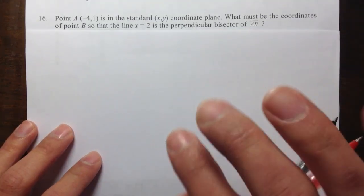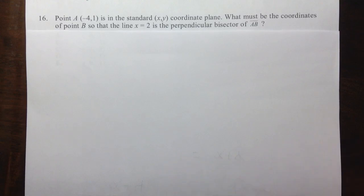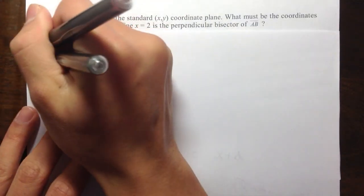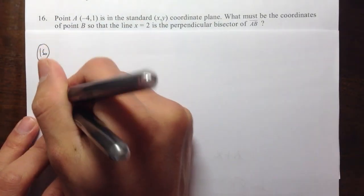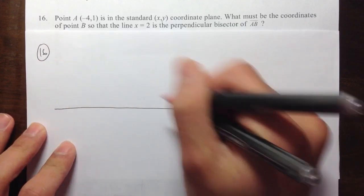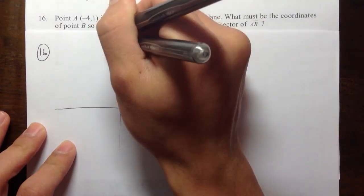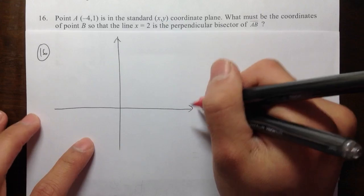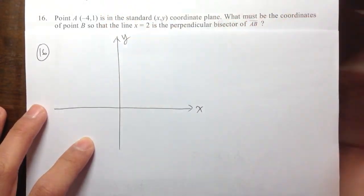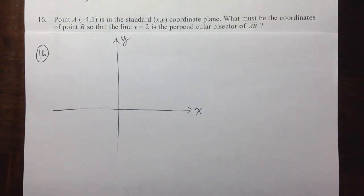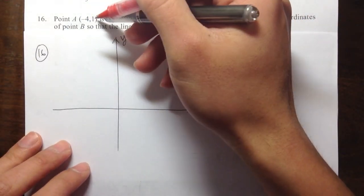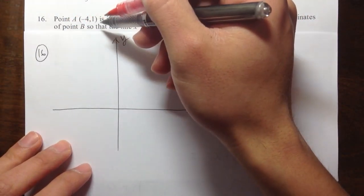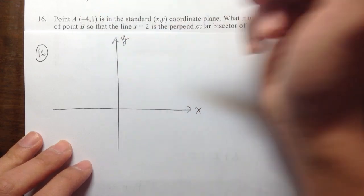So let me put everything into a picture first. That will illustrate the question much better. We're talking about the x and y plane. Let me just draw the x and y coordinates. Horizontally is the x, vertically is the y. Let's label point A first, which is at negative 4 comma 1.